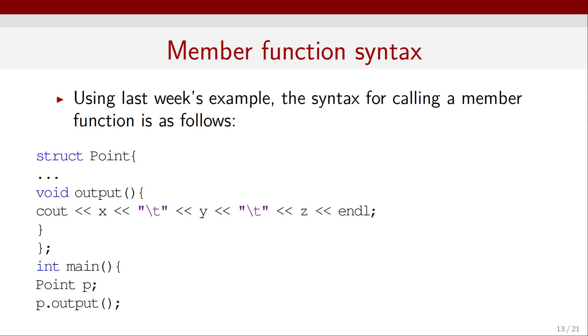Let's look at member function syntax. Let's use an example that we showed in an earlier lecture. The syntax for calling a member function is this: we have a structure, a struct point, and inside that we have a member function called output that prints out the coordinates x, y, and z of a point on the screen. The code for calling a member function of that structure point was first we declare a point p, and then we use p.output to access that member function inside that struct.